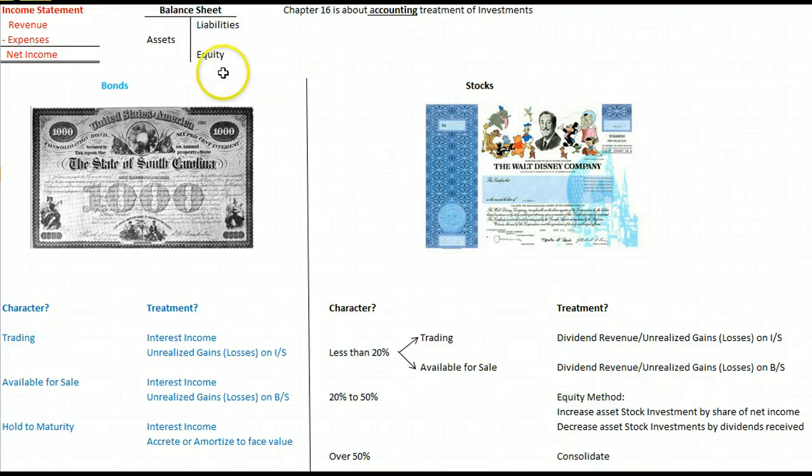But the unrealized gains or losses will be on the balance sheet. So again, if we bought the stock for $5, it's an available-for-sale investment and it goes up to $6, we'll mark it up to $6 on the left-hand side, and that unrealized gain won't be on the income statement. It'll show up over here as an unrealized gain in our equity section of our balance sheet.